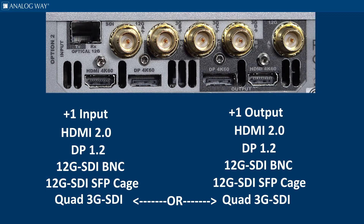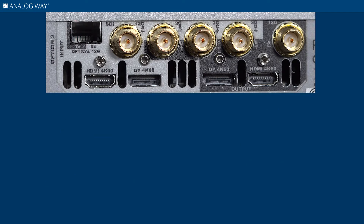This card allows for additional conversions to the HDP 4K card, like quad 3G SDI to 12G SDI or HDMI 2.0 or DP 1.2, and 12G SDI or HDMI 2.0 or DP 1.2 to quad 3G SDI. HDMI 2.0 supports HDCP 1.4 and HDCP 2.2, and DP 1.2 supports HDCP 1.3.